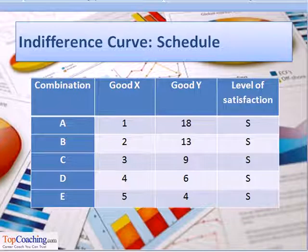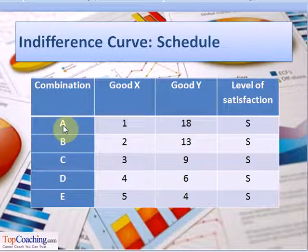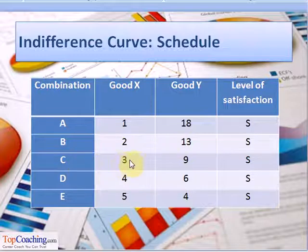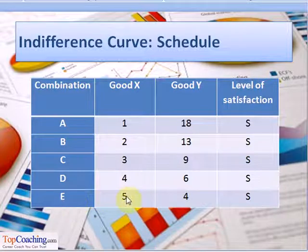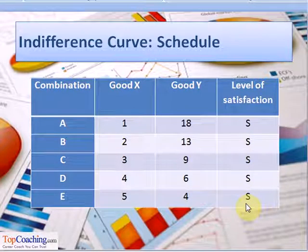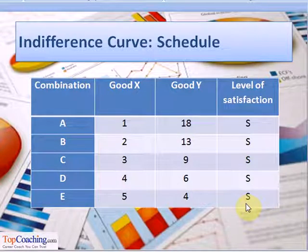The table given here is an indifference schedule. Various combinations of good X and good Y are listed, consisting of different units of X and Y, named as A, B, C, D, E. For example, combination A consists of 1 unit of X and 18 units of Y; B consists of 2 units of X and 13 units of Y; C consists of 3X plus 9Y; D consists of 4X plus 6Y; and E consists of 5X plus 4Y. The satisfaction derived by the consumer from all these combinations is the same, denoted by S, so the consumer remains indifferent to them.